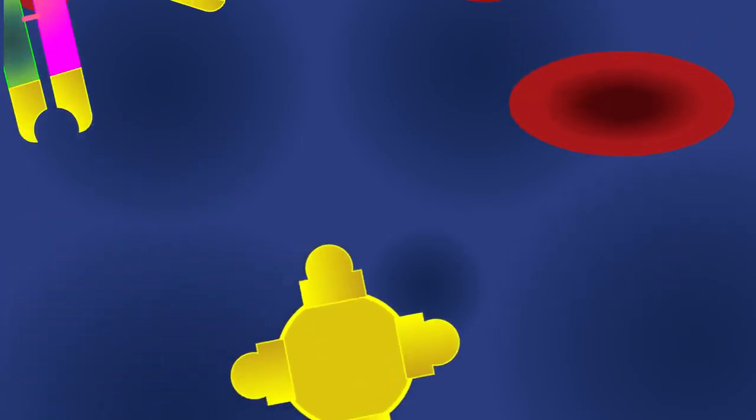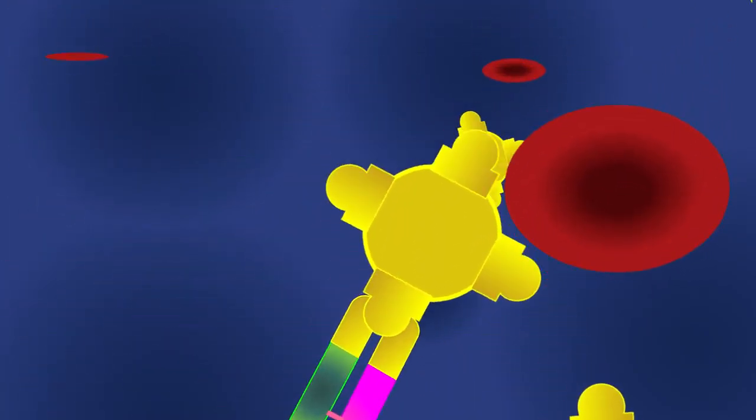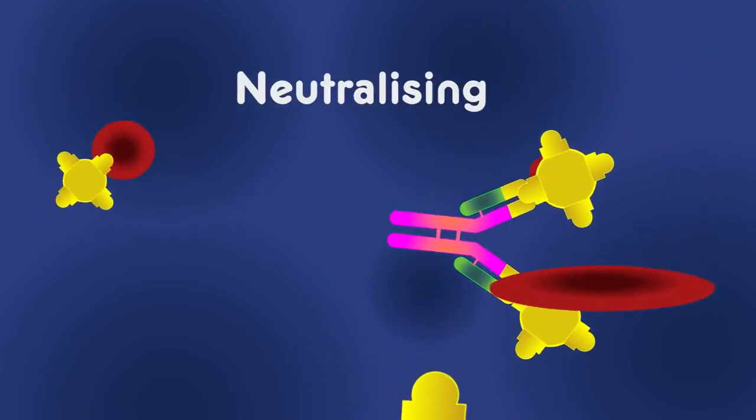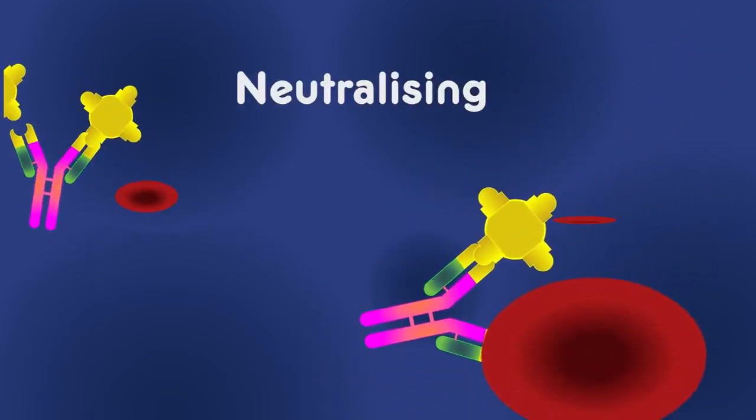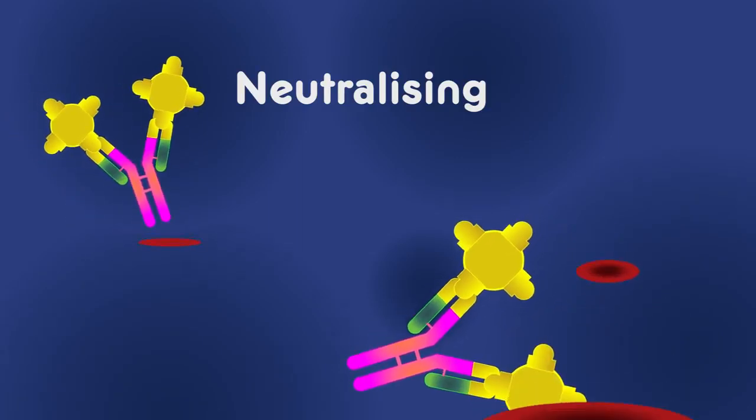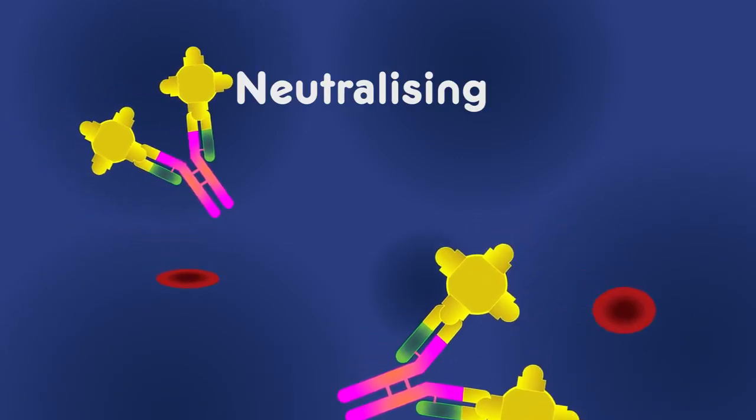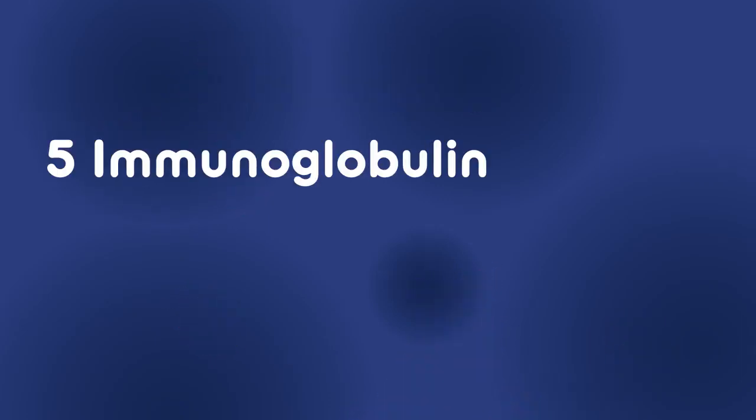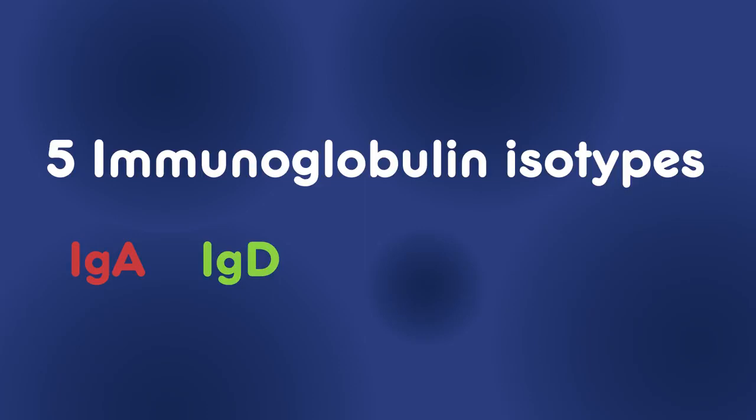By binding to an antigen, an antibody can stop it from entering or damaging cells. This is known as neutralizing. The antibody can also tag the antigen for attack by other parts of the immune system. In mammals, there are five immunoglobulin isotypes that help direct the appropriate immune response for each type of foreign invader.